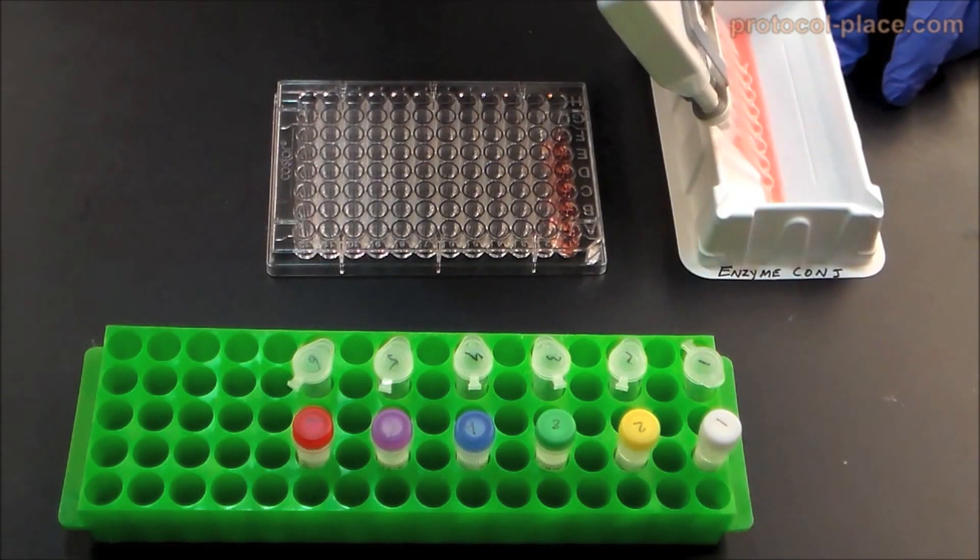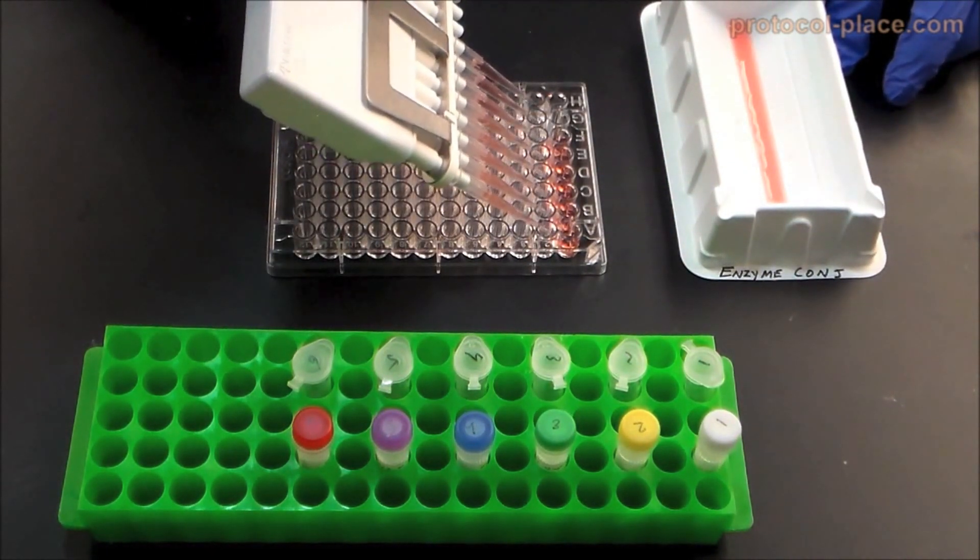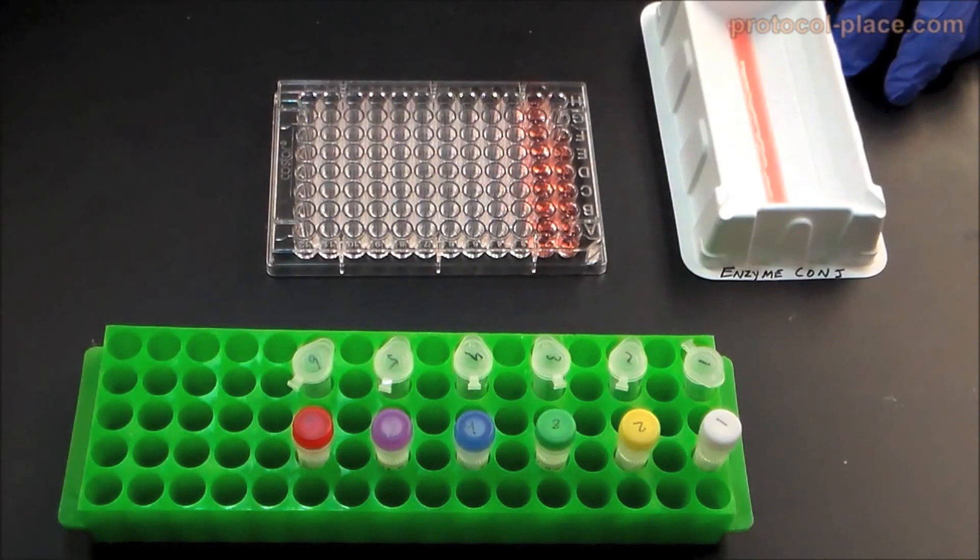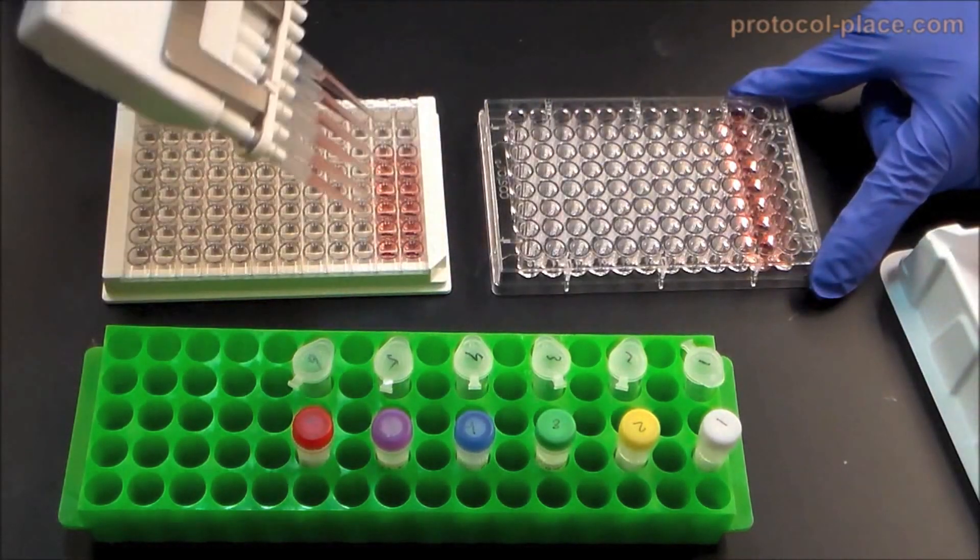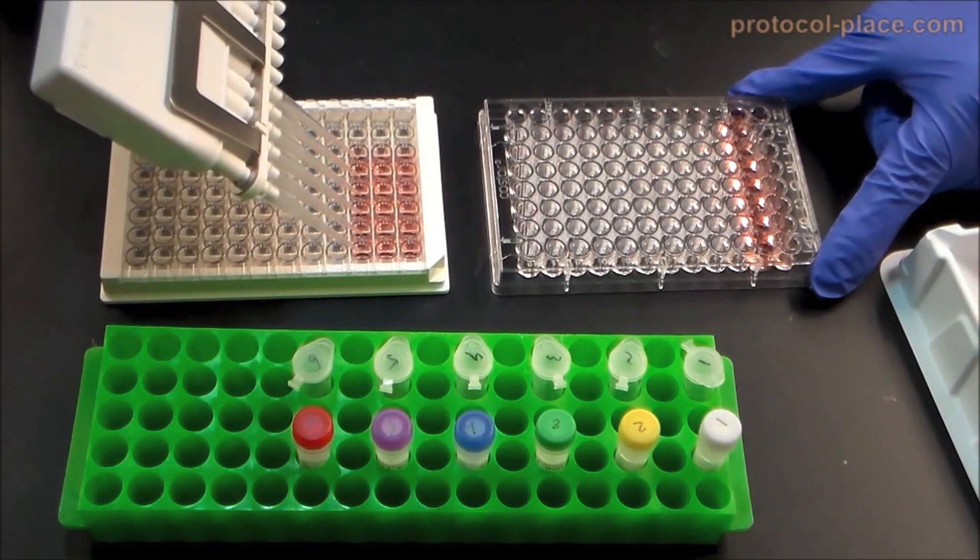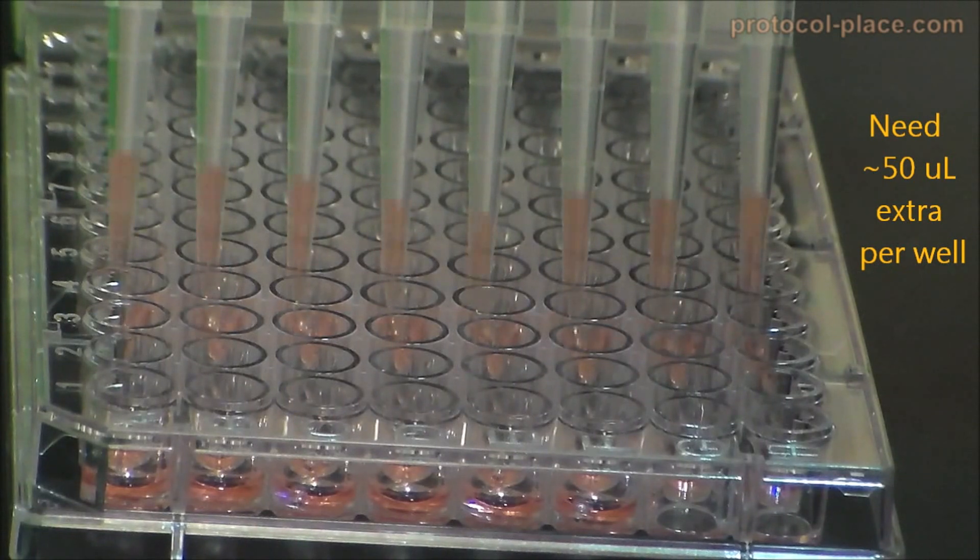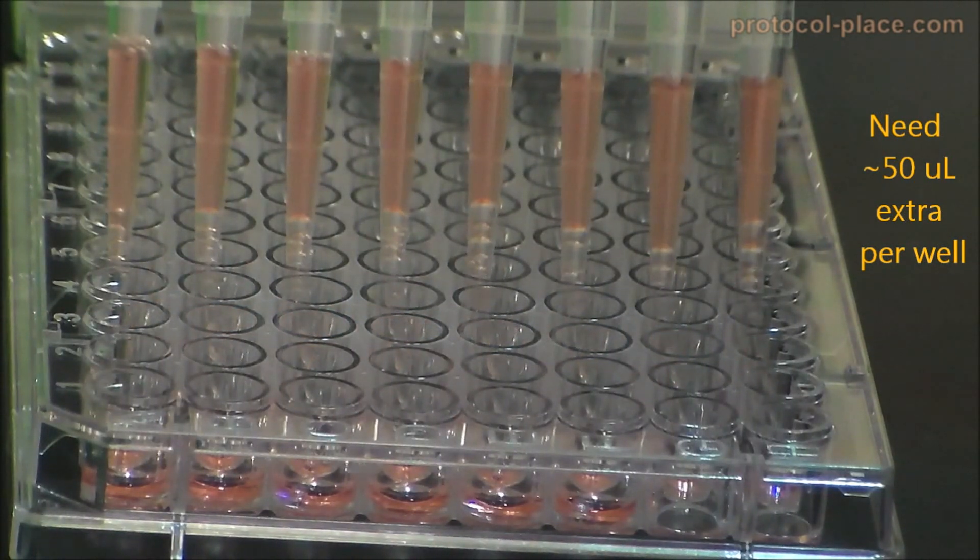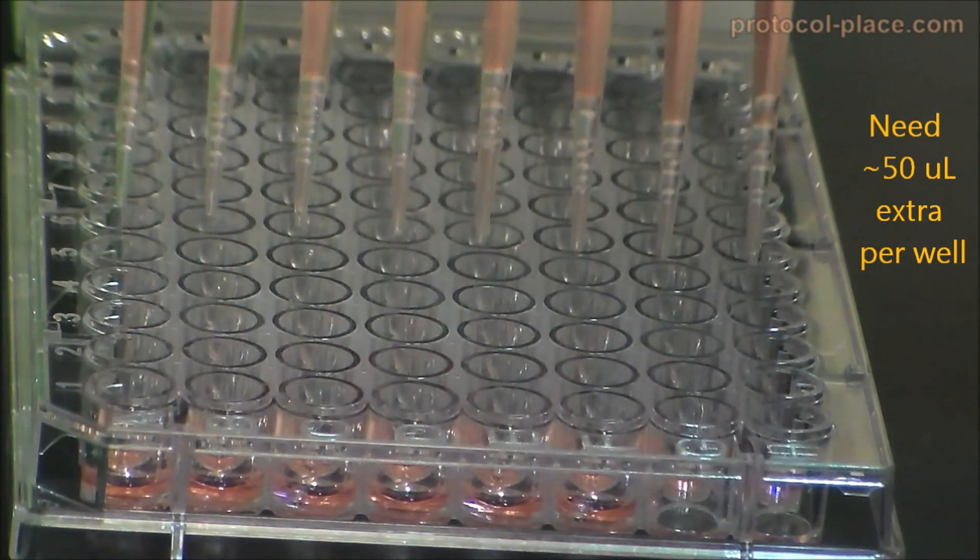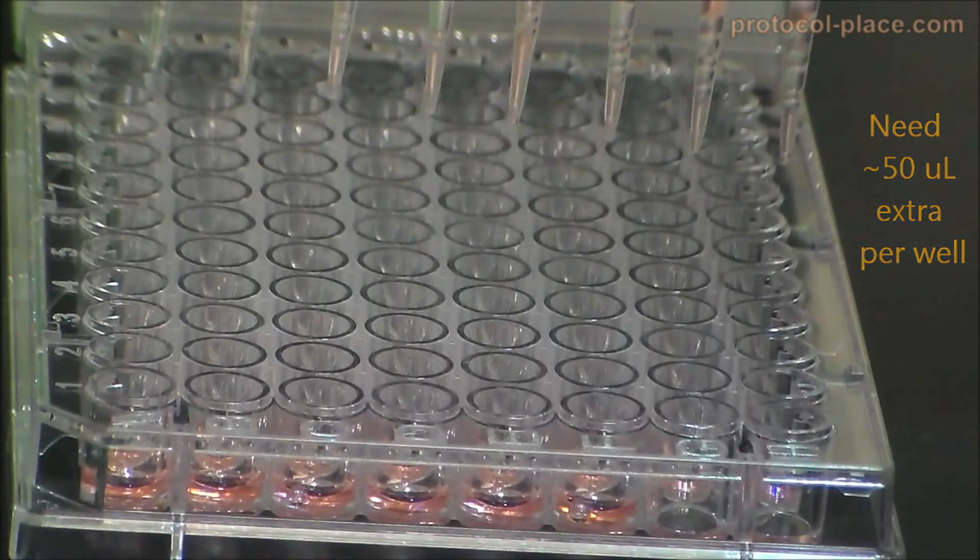Once all of the samples and standards have been combined with an appropriate amount of enzyme conjugate, the mixture can be conveniently added to the ELISA plate with a multi-channel pipette. Keep in mind that the volume of mixture in each well should be about 50 µL greater than whatever volume you would like to transfer to the ELISA plate, otherwise you might have difficulty transferring the full volume of mixture to the ELISA plate.